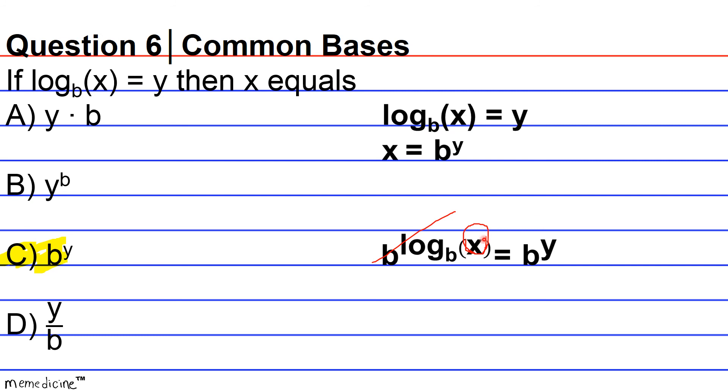And remember that whatever you do to the left-hand side of the equal sign or the equation, you also have to do to the right-hand side or you must perform the same operation on the right-hand side to keep things balanced. So I also raise base b to the y. And therefore when we simplify things, we get that x is equivalent to b raised to the y, which again is answer choice c.